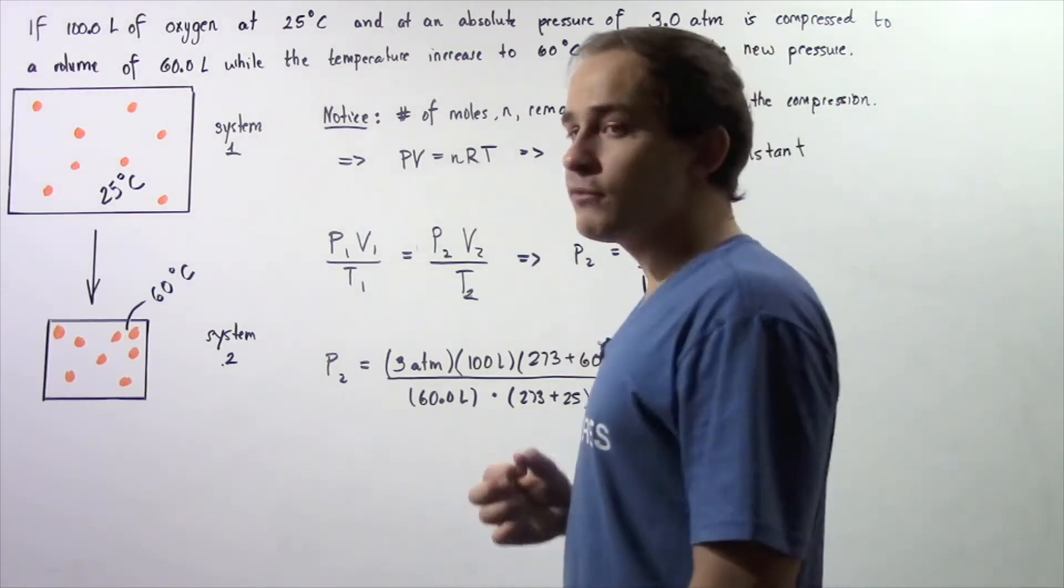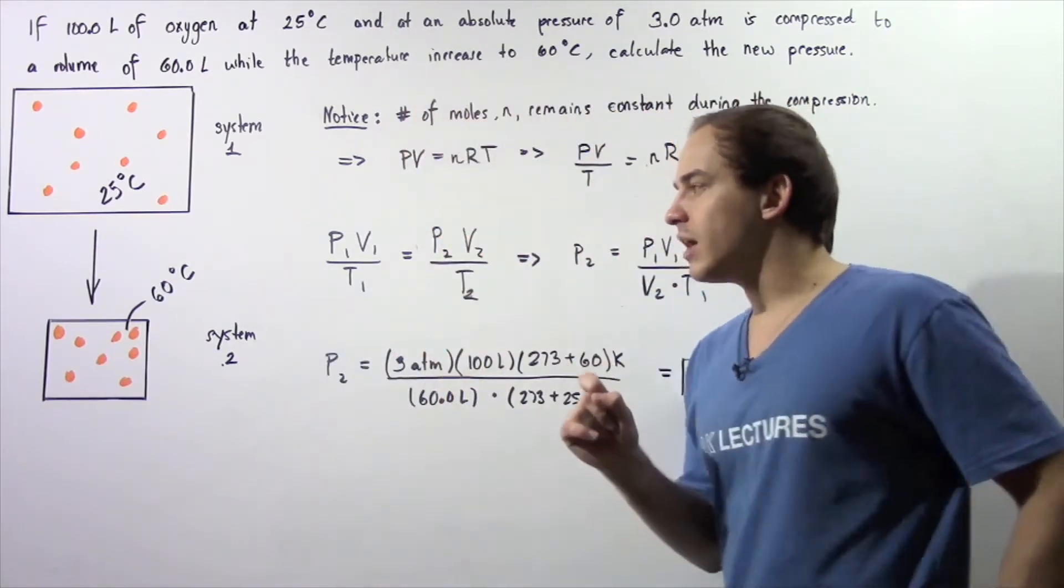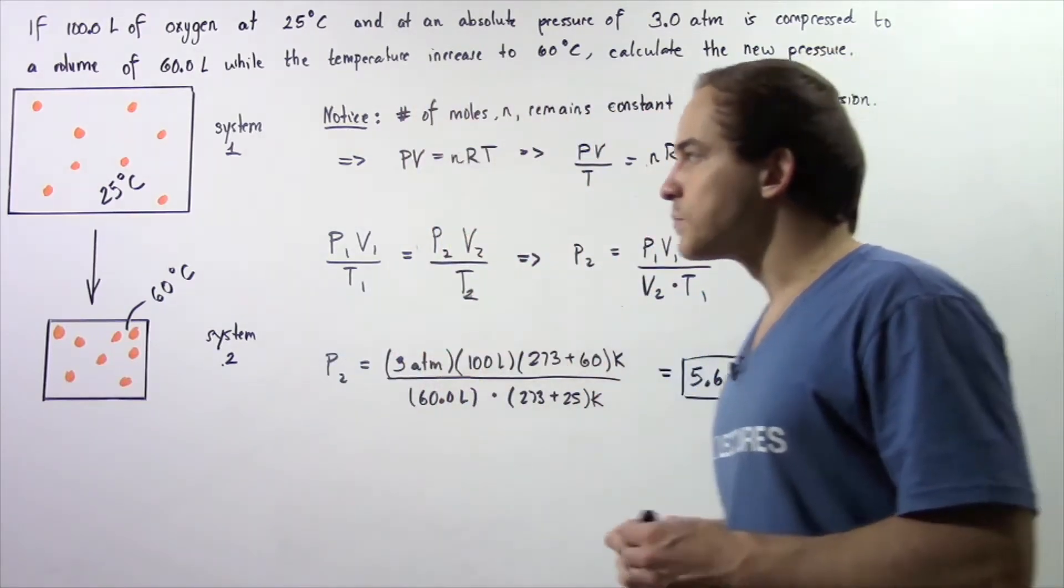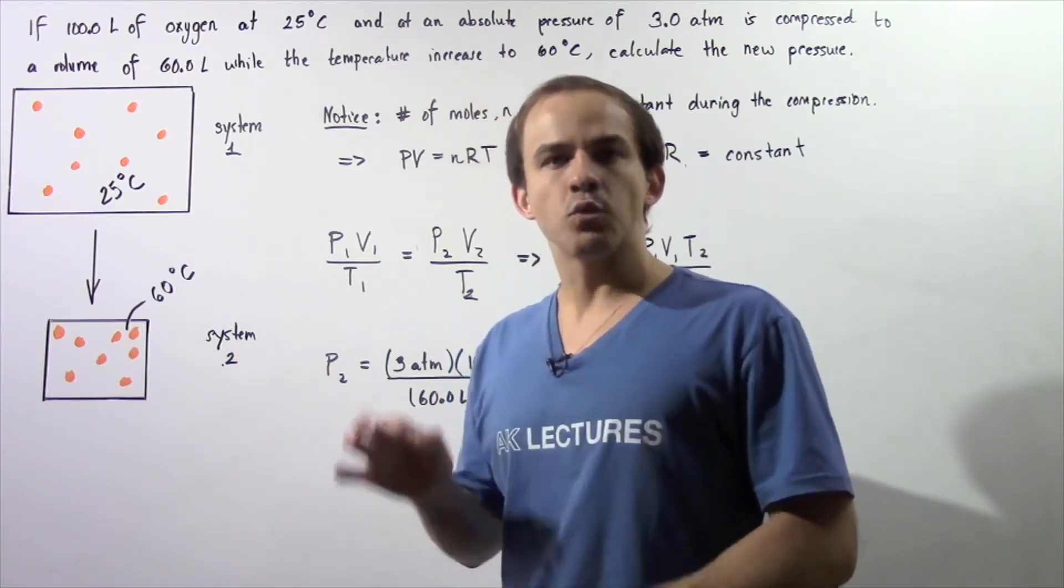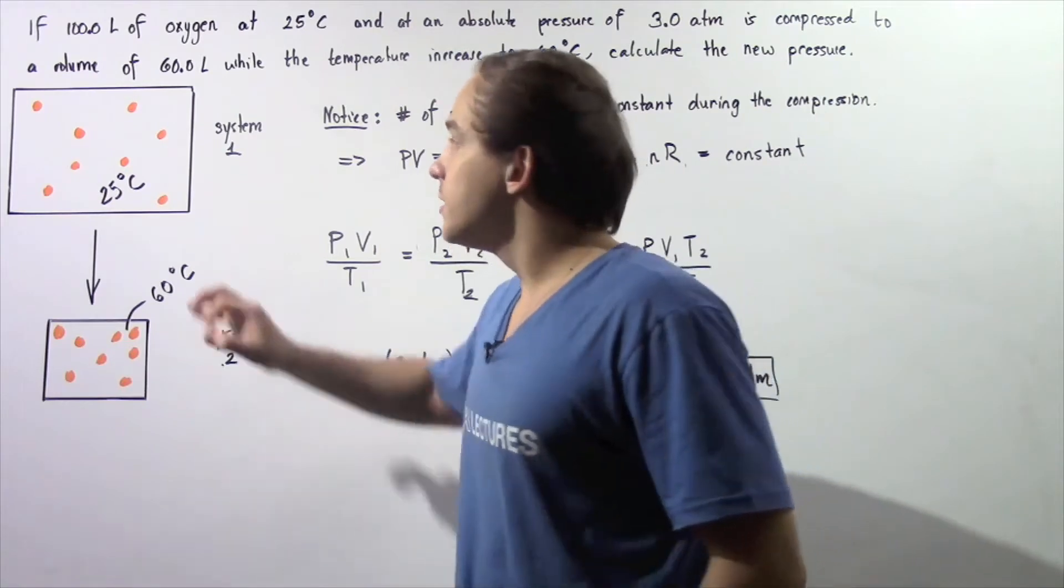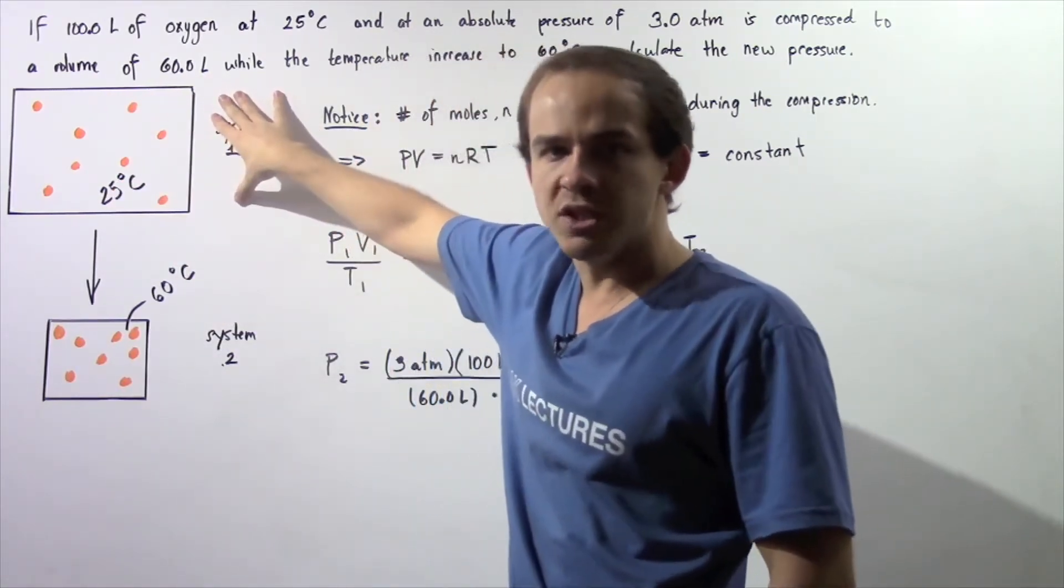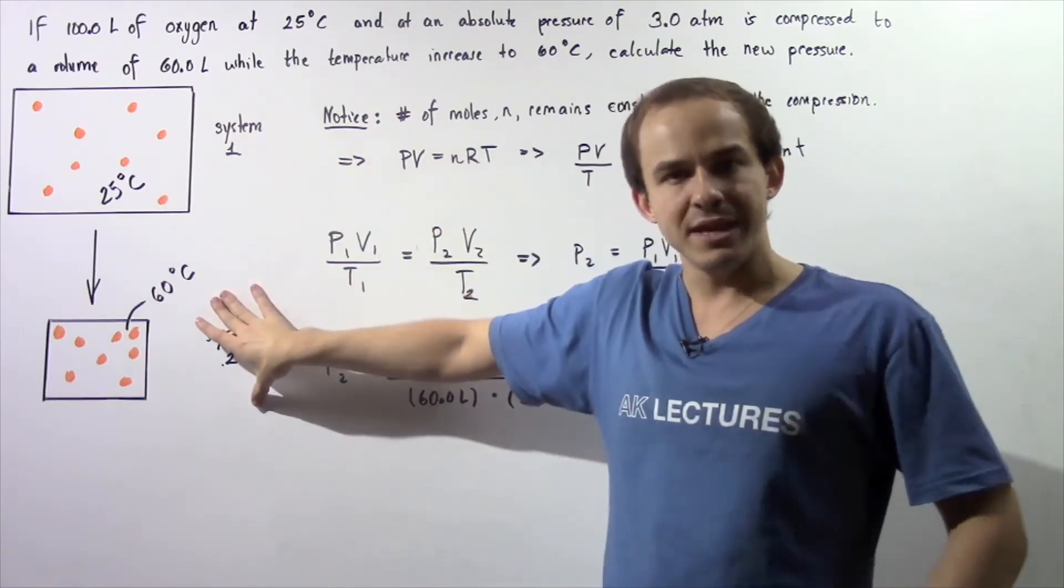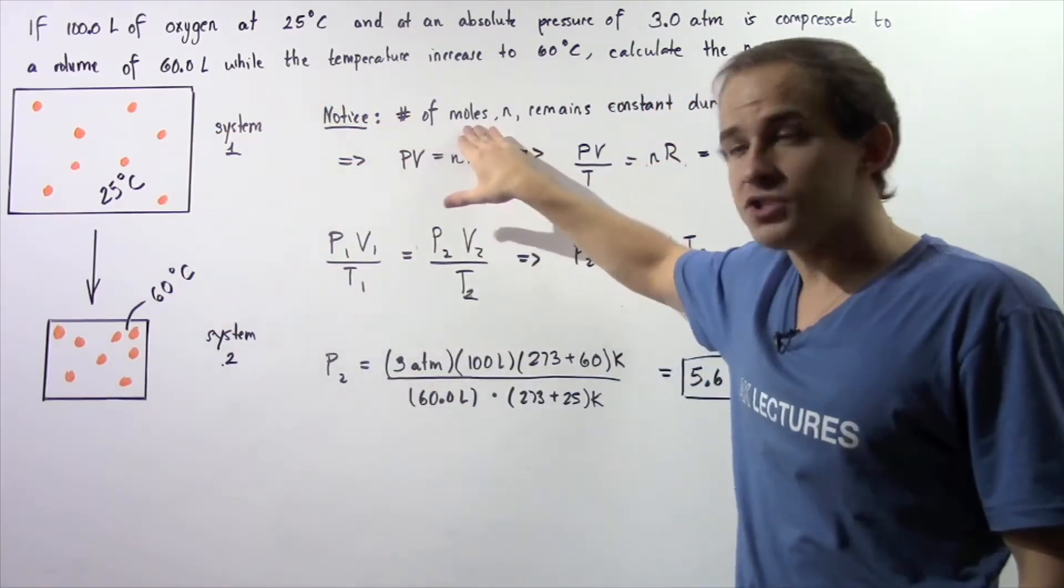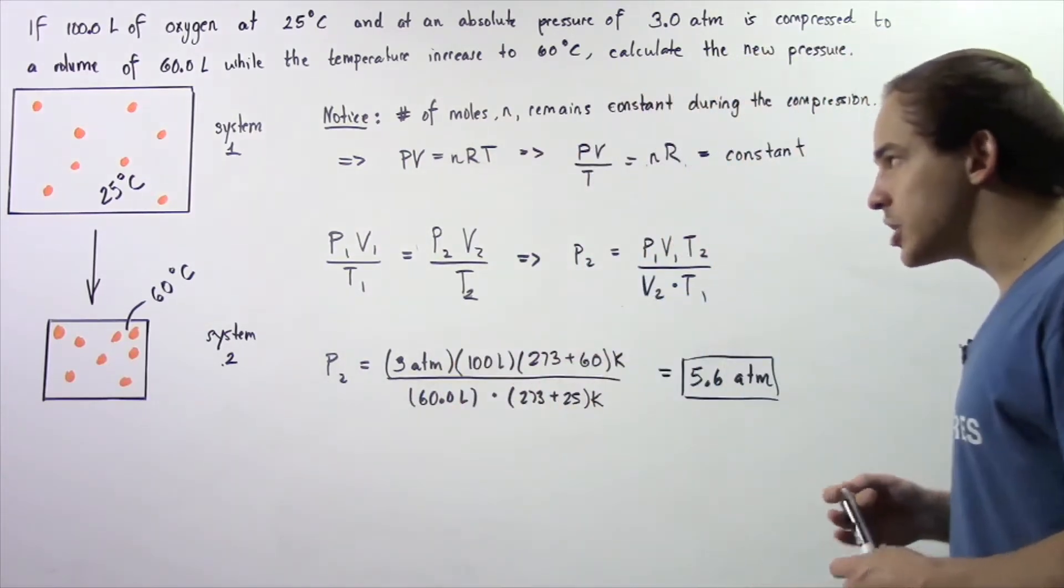To calculate the value we have to apply the ideal gas law. But first we have to realize the following important point. Notice the number of gas molecules inside our system remains constant. The number of gas molecules in system number one is equal to the number of gas molecules in system number two. And that means the number of moles given by N remains constant during our compression.